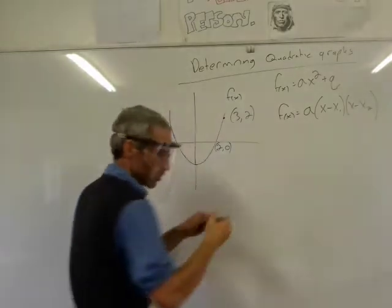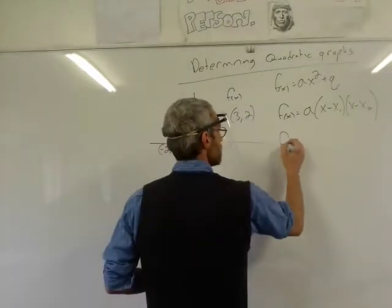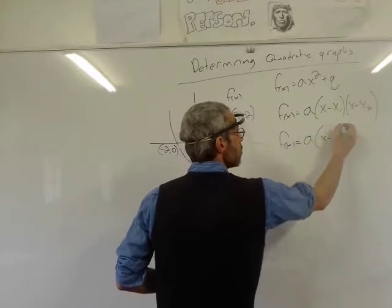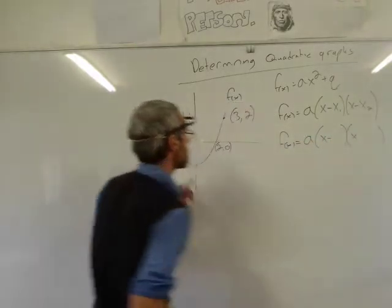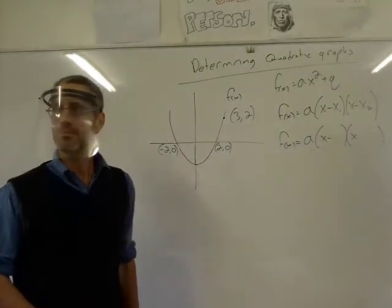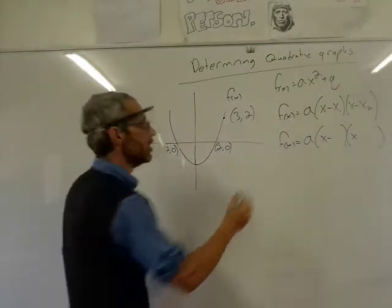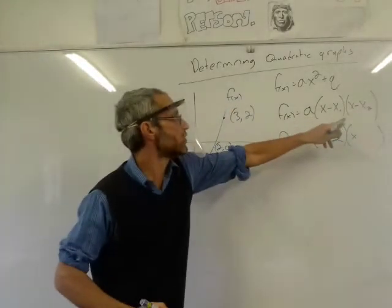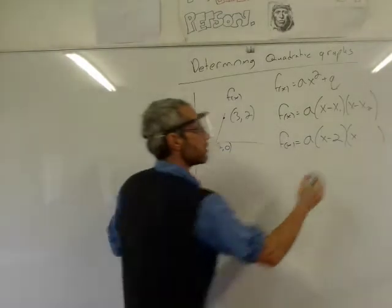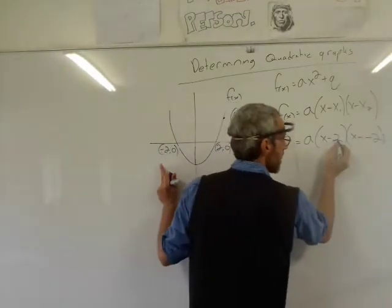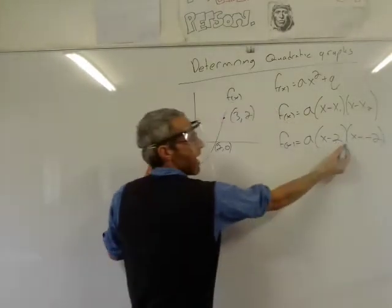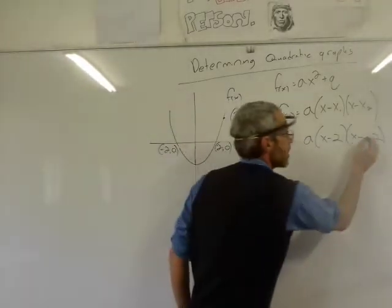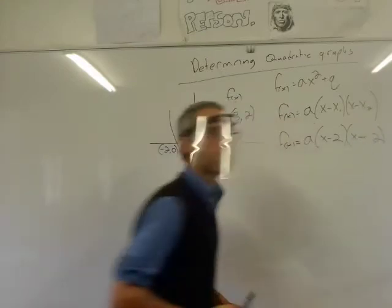For this specific equation, I don't know what a is, but I do know the roots — the x-intercepts. What are your x-intercepts here? 2 and minus 2. So instead of x₁ I'll write 2, and instead of x₂ I'll write minus 2. So the formula becomes a times (x − 2) times (x − (−2)), which is (x − 2)(x + 2).